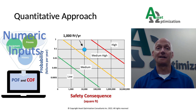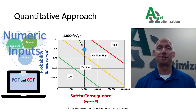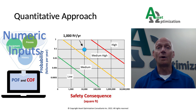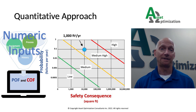A quantitative risk analysis uses logic models to calculate probabilities and consequences of failure. This data-driven approach requires more detailed numeric data to calculate probability and consequence. While a quantitative risk analysis is more time-consuming, it is also more repeatable and the results provide more discrimination for prioritizing inspections based upon risk.